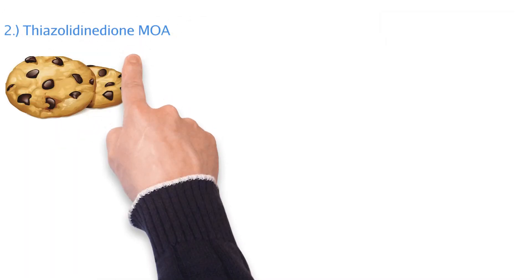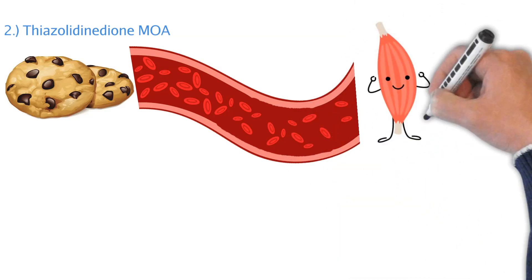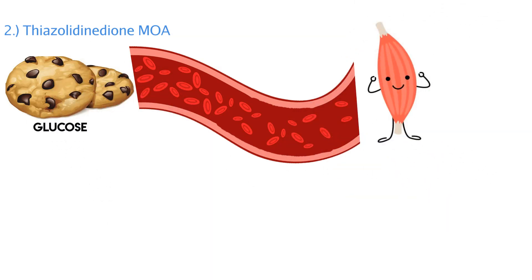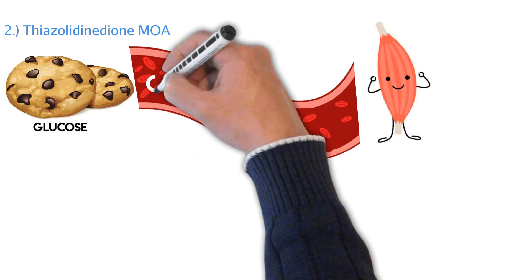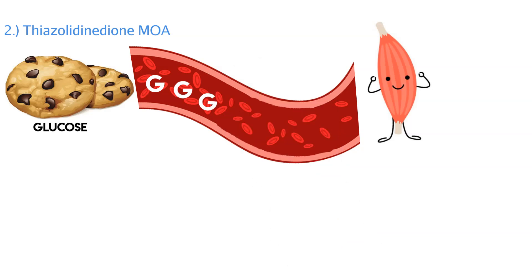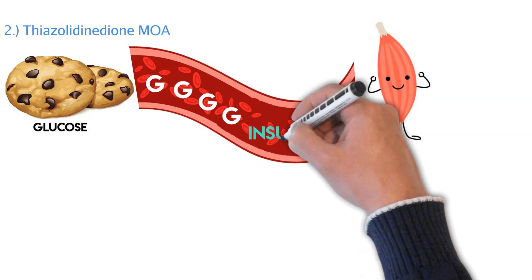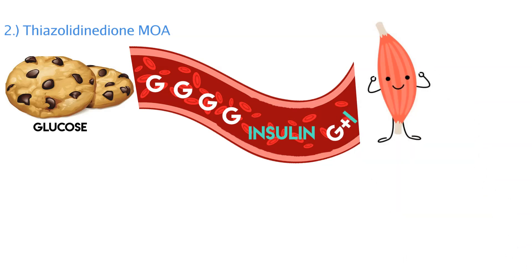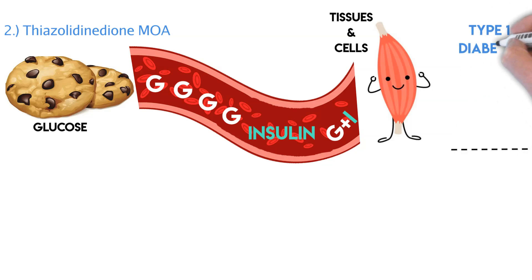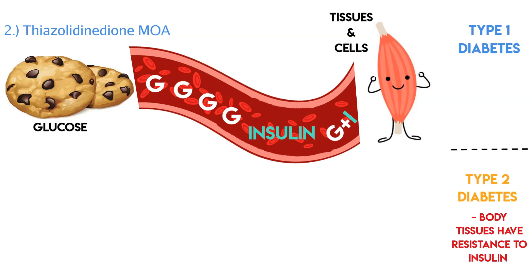Now let's talk about how these medications actually work. They work for type 2 diabetic patients, and we need to understand how glucose and insulin interact in our body so we can see how these TZDs actually help. Anytime you have glucose absorption, either through food or creation of glucose through your liver, you'll have more glucose in your bloodstream. Then we look for insulin pumped out by our pancreas to couple together to enter our tissues and cells. Type 2 diabetic patients have an issue where there is so much glucose in their blood that over time, the tissues have a resistance to insulin.